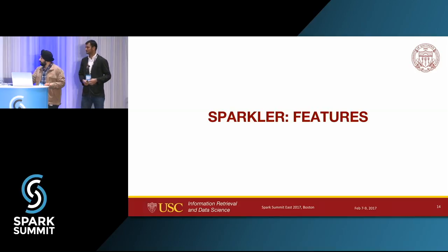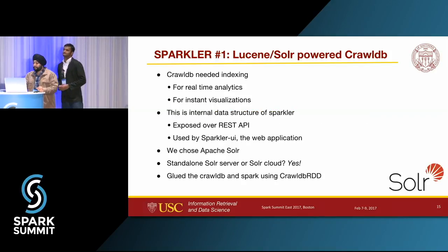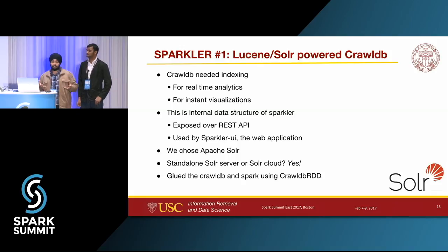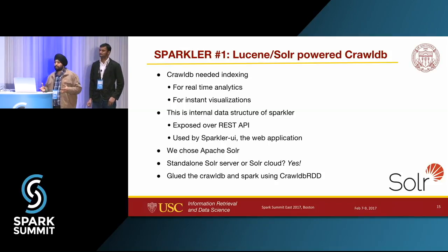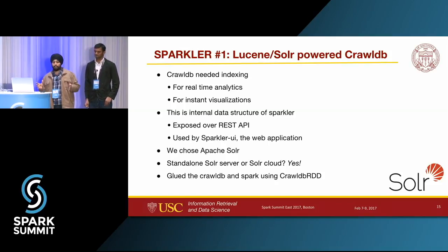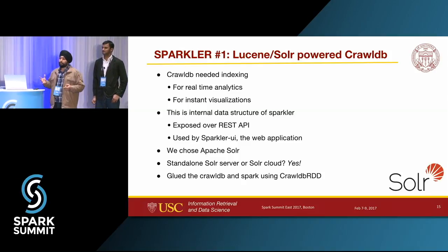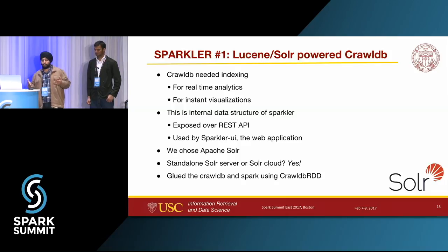Now that we've understood the basic workflow, let's deep dive into the important features of Sparkler. The first is the crawl DB — an internal structure the crawler uses to store URL statuses and metadata of pages it has fetched. There were two primary challenges: it should be accessible with a visually appealing dashboard providing near real-time analytics on top of crawls, so you can understand where the crawl is going and try to control it if needed.